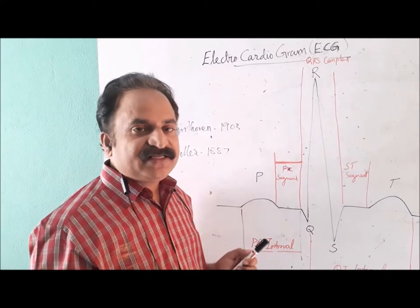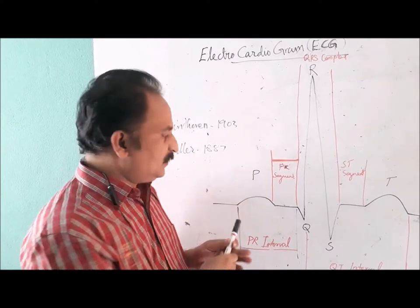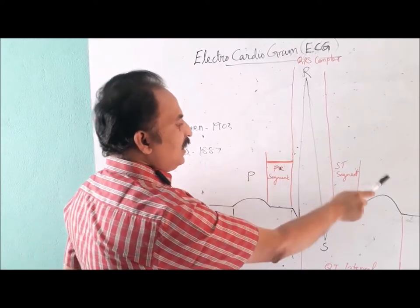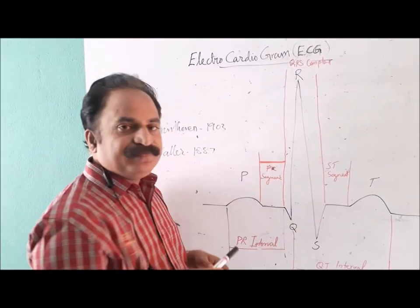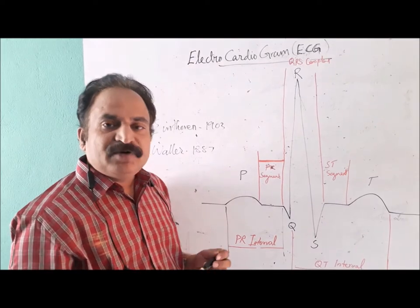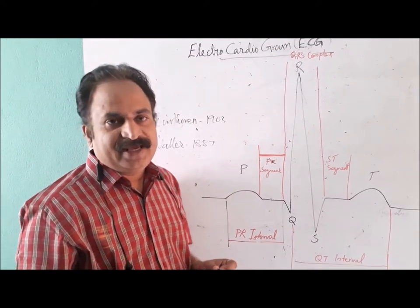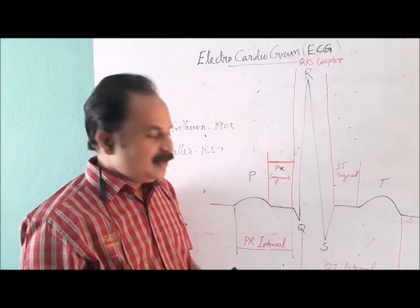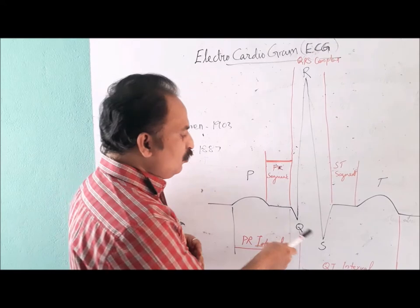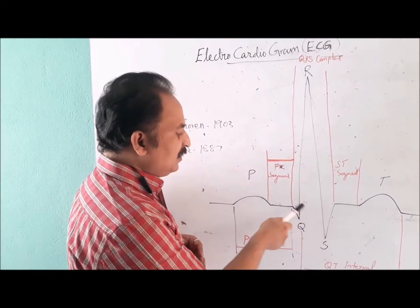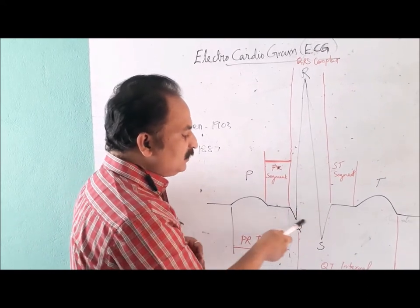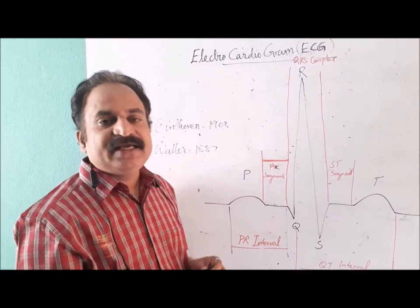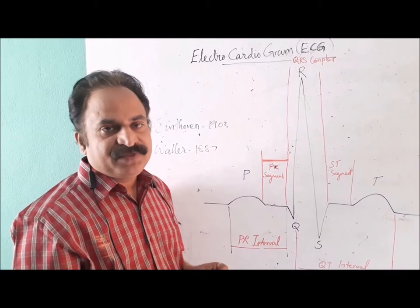The five deflections or waves P, R, and T lie above the horizontal line, which is why they are called positive waves. But Q and S are below this horizontal line, so they are negative waves.